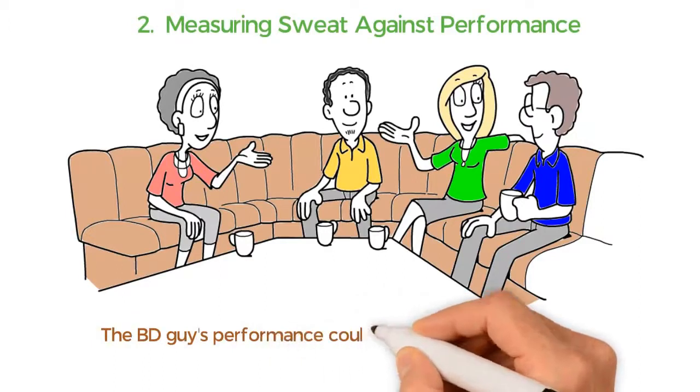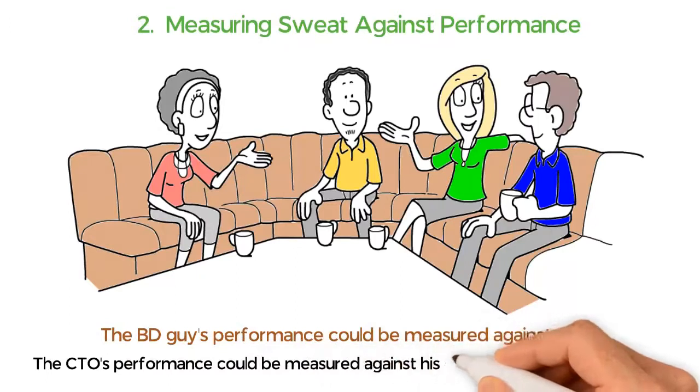For example, the BD guy's performance could be measured against sales, and the CTO's performance could be measured against his design timelines and standards.